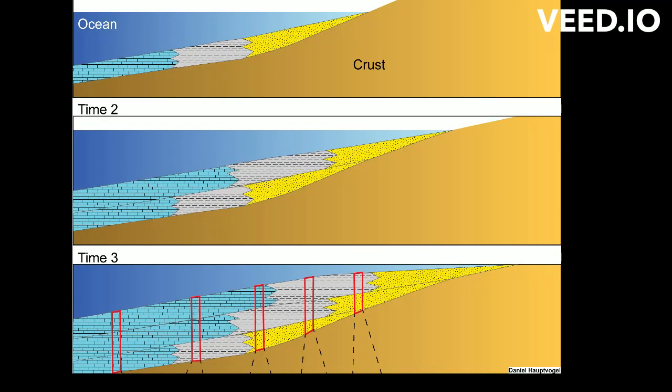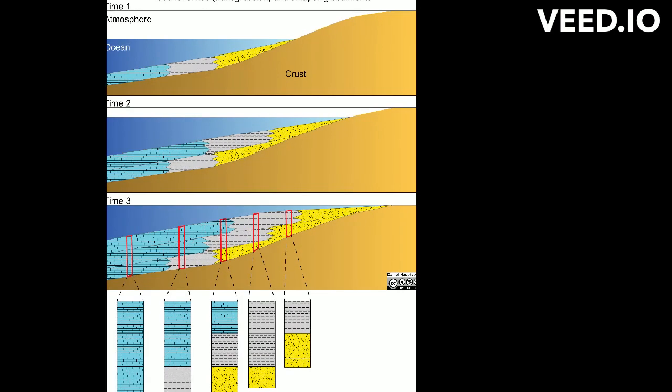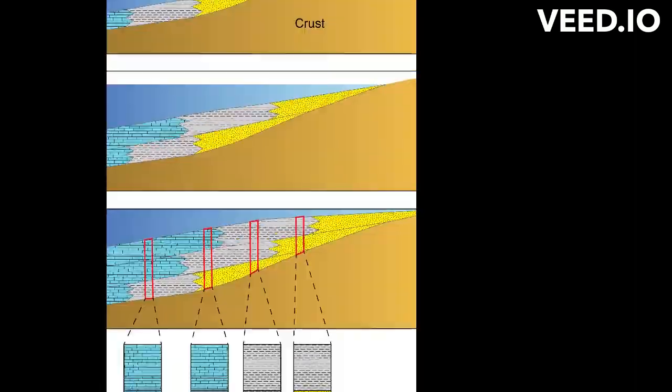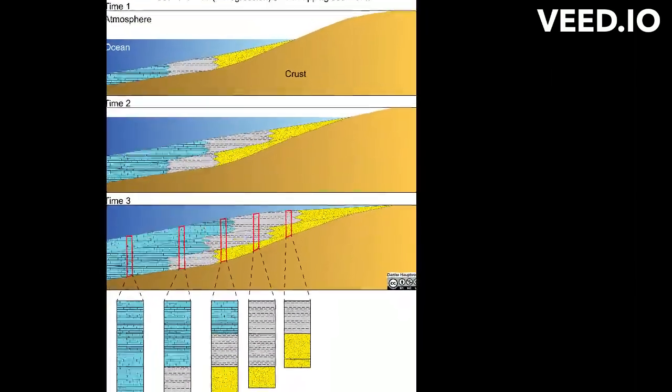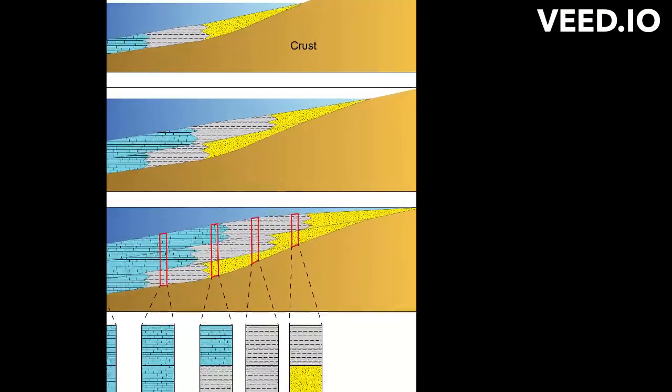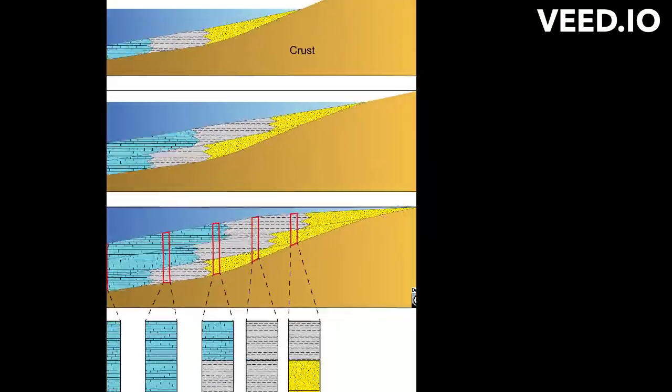Marine transgression is defined as the migration of the shoreline out of a basin onto land during a rise in sea level. A transgression can result in sediments characteristic of shallow water being overlain by deeper water sediments. Transgressions can be caused by the land sinking, by ocean basins filling with water or decreasing in capacity, or by the melting of ice caps.